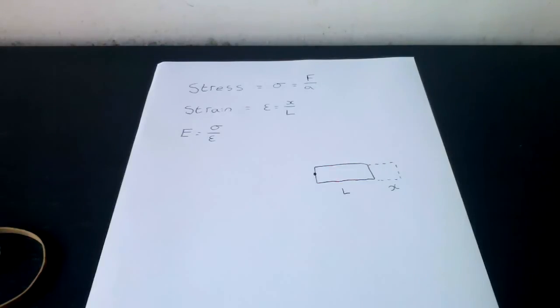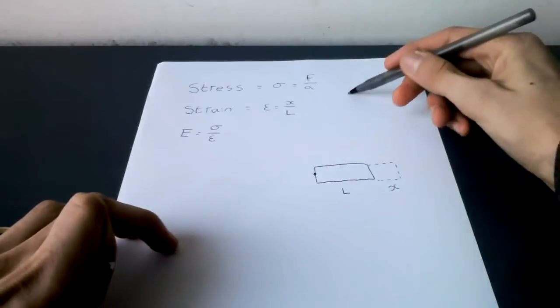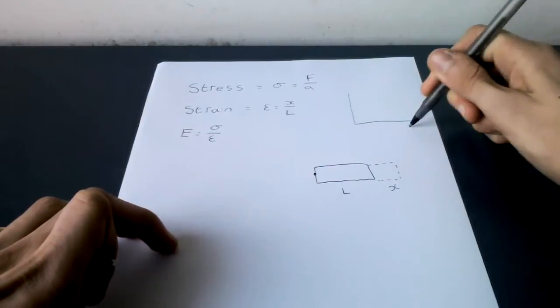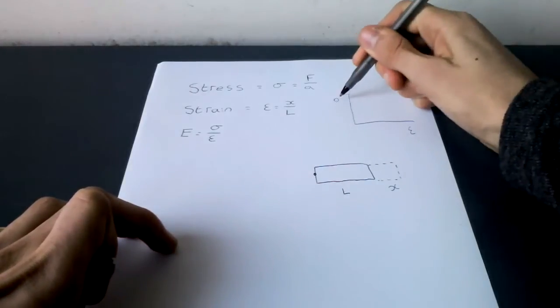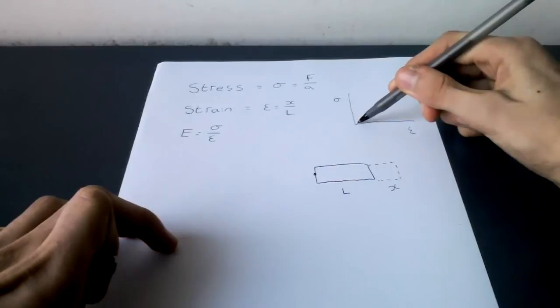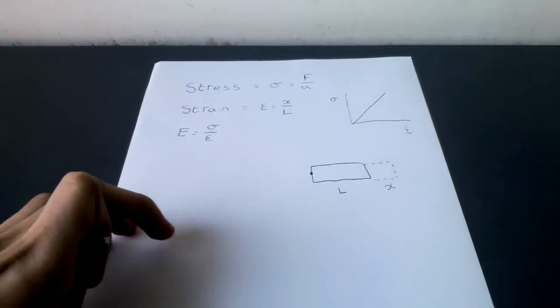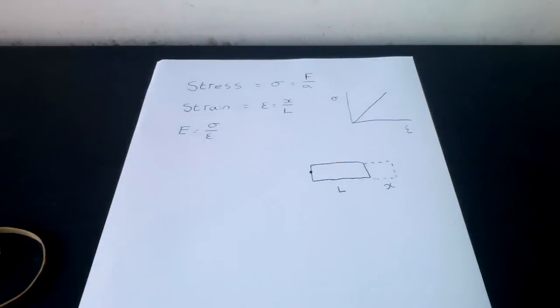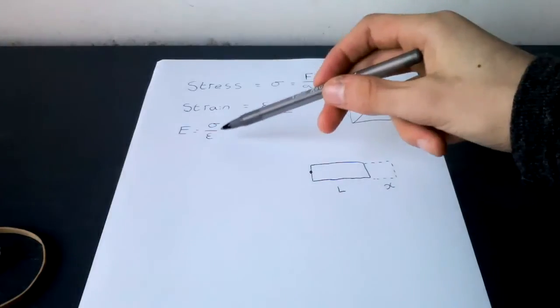Now we are going to look at Young's modulus. If you plot a graph with stress against strain from an object showing a linear elastic behaviour you get a straight line. This is because stress is proportional to strain. The gradient of the straight line is Young's modulus E which is equal to stress over strain.